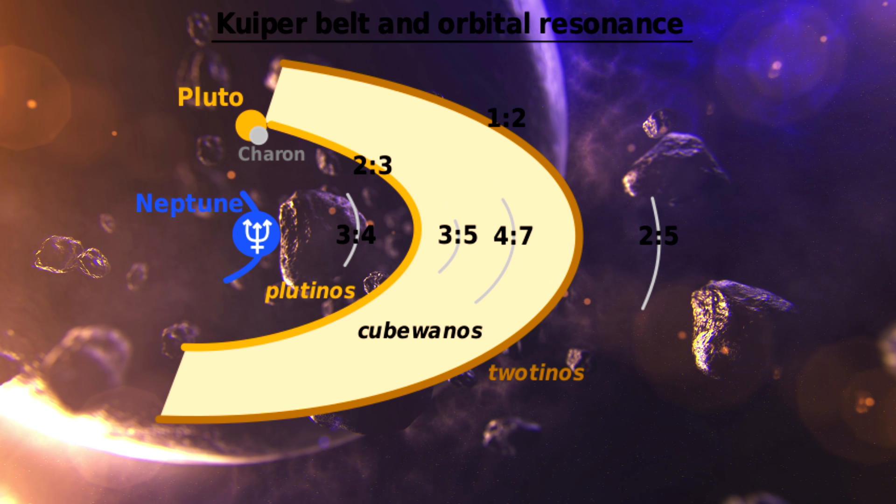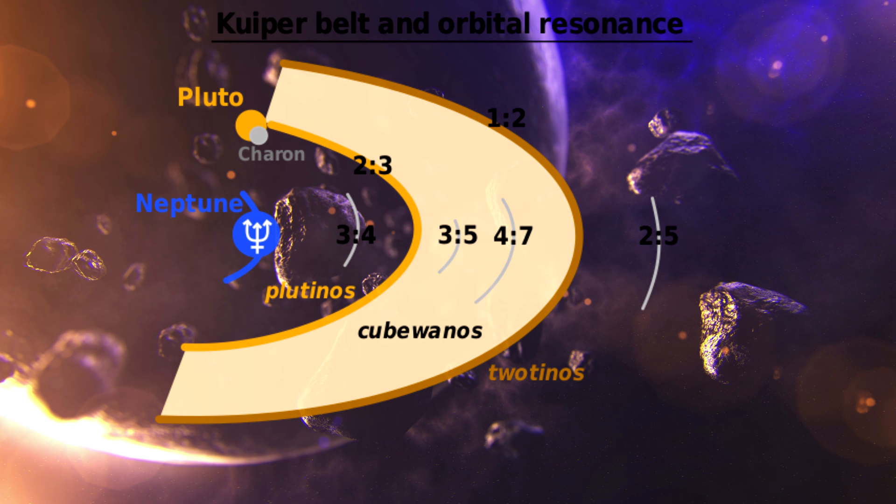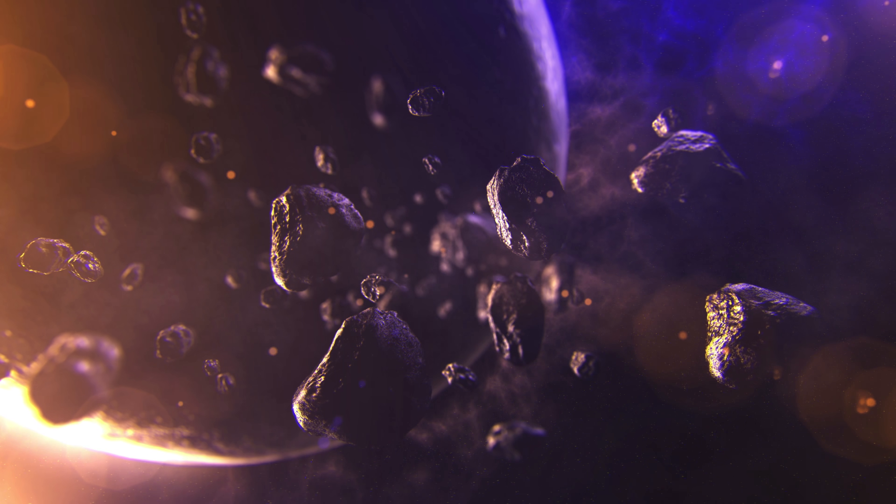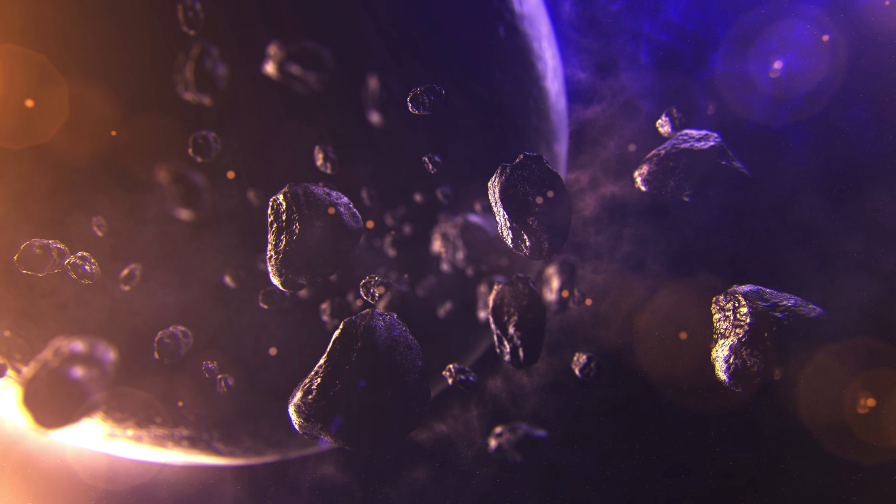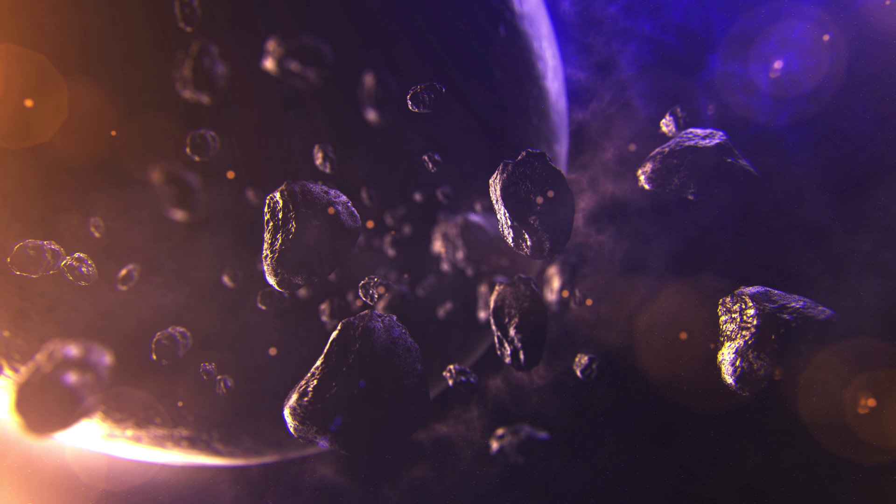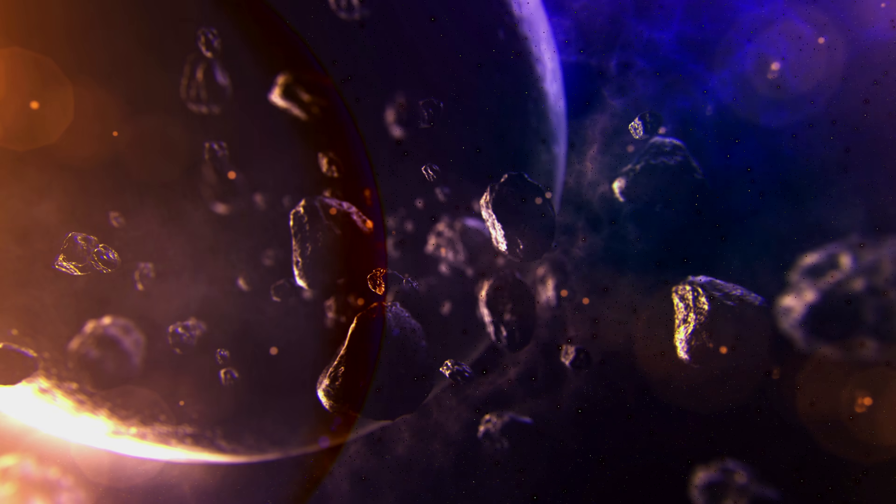This Kuiper belt, though, was likely several thousand times more massive than our current system. The disk would extend as close as 20 astronomical units from the Sun, as opposed to 50 astronomical units today. Later, Neptune would begin to migrate outwards due to interactions with the disk as it begins to clear these objects.